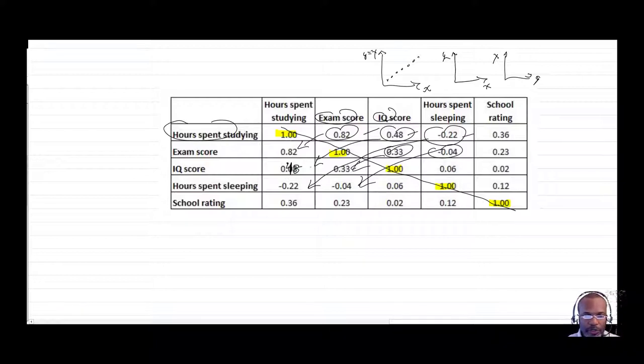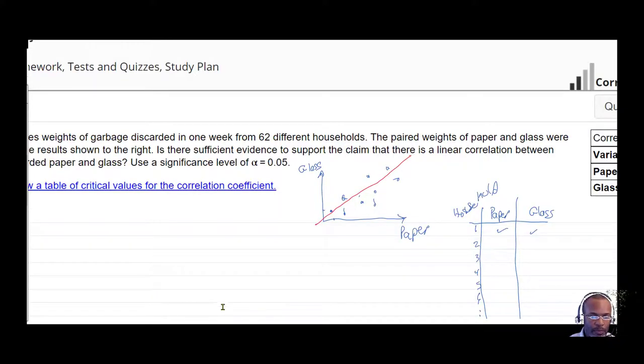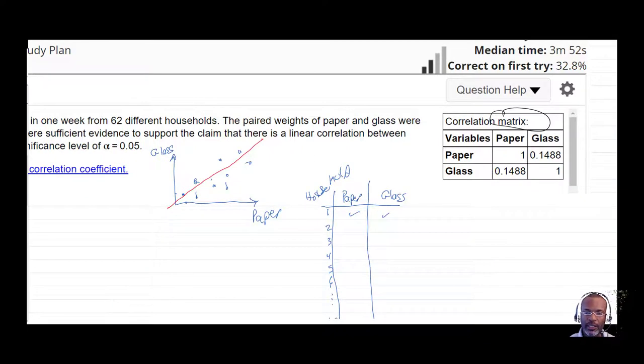So in a very real sense, we don't need any of this information here since it's going to be perfectly symmetrical. Nonetheless, it's just a way of representing multiple variables, more than just two variables. So all of that is just to say that the weights for paper will always correlate perfectly. It's a one to one, and this will be symmetrical, the 0.1488.